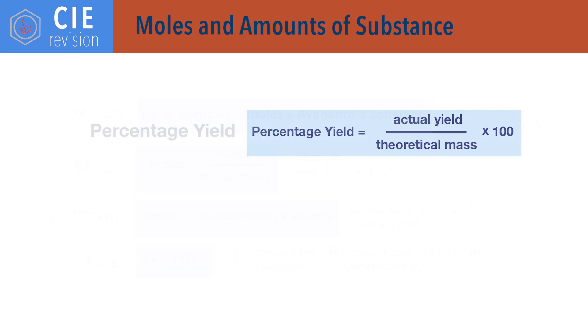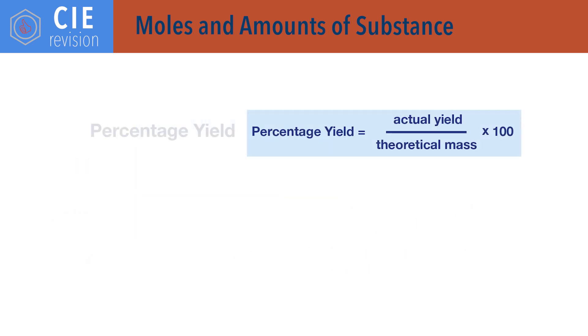Percentage yield equals actual yield, or mass of product obtained, divided by theoretical or maximum possible mass of product that could have been obtained, times 100.